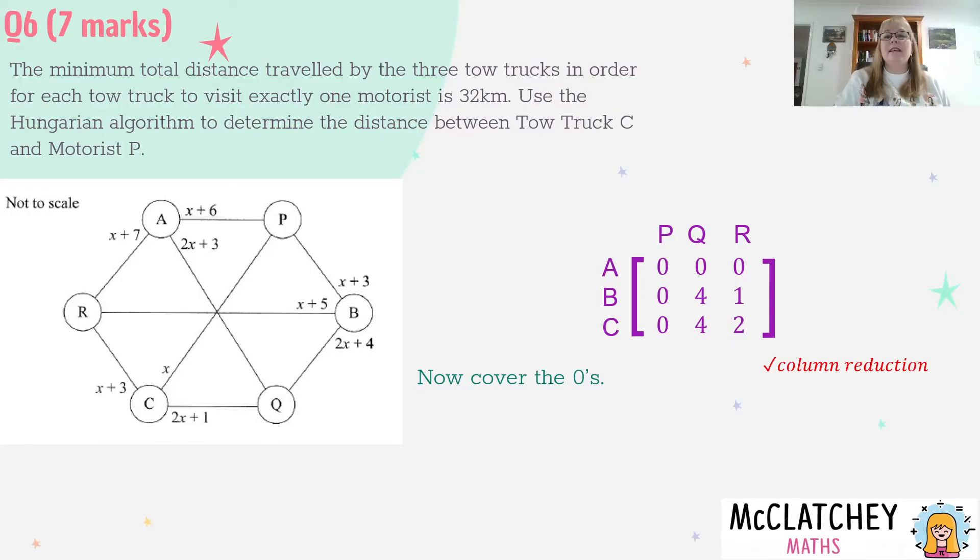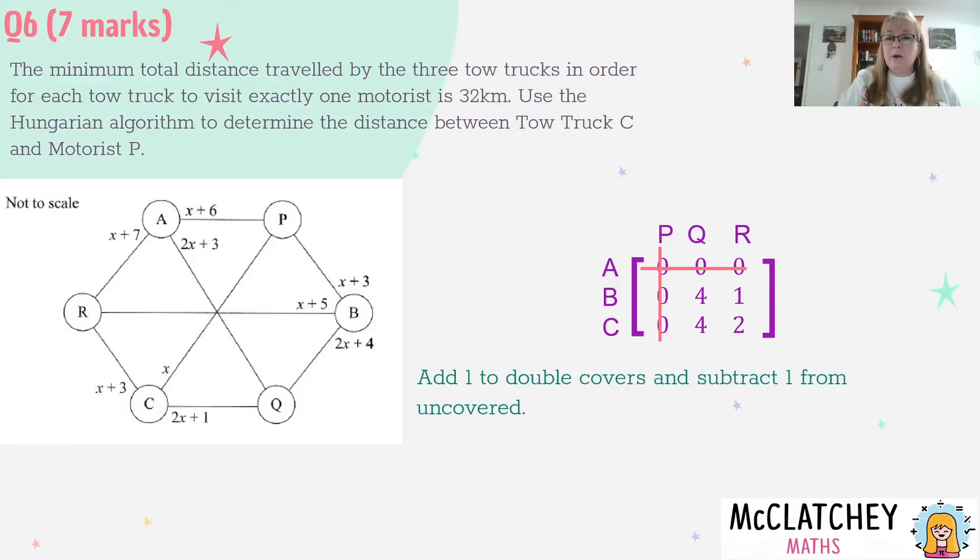I've got to cover those zeros again. This time when I cover those I'll only have two covers, still not finished, which means I haven't found the minimal allocation. So now I need that third cover. I've got to apply the Hungarian algorithm. That means I'm going to add one to my double covers and subtract one everywhere there's an uncover. There's one double cover at allocation A to P - that becomes 1, and everything else gets one taken away.